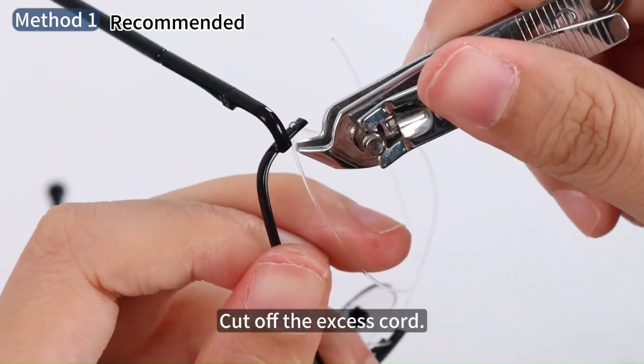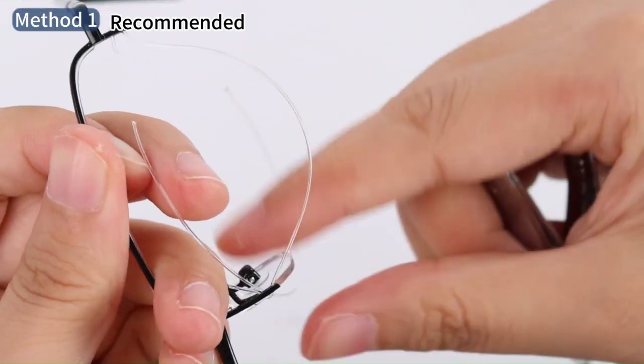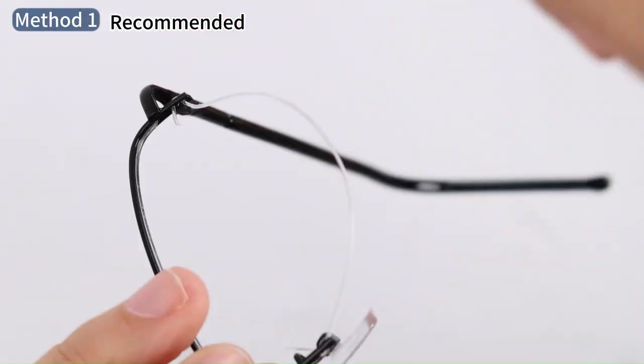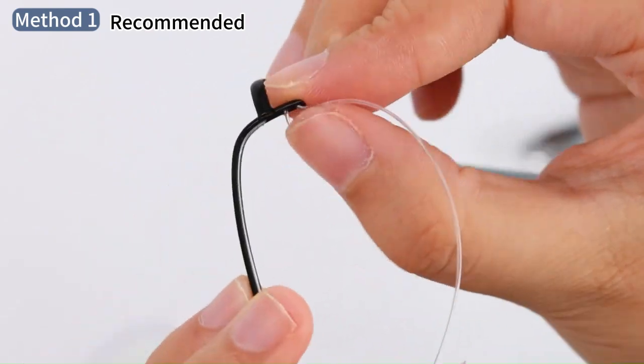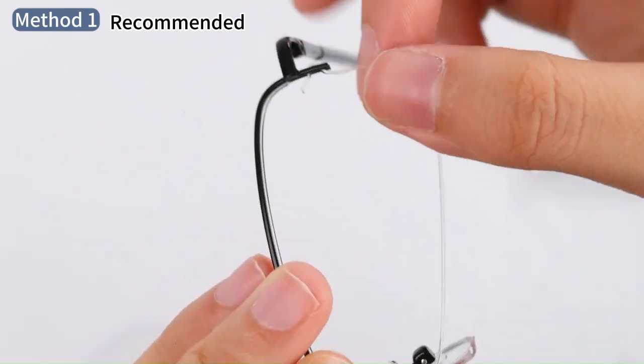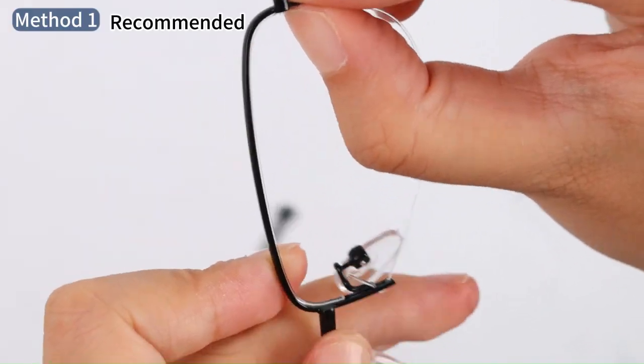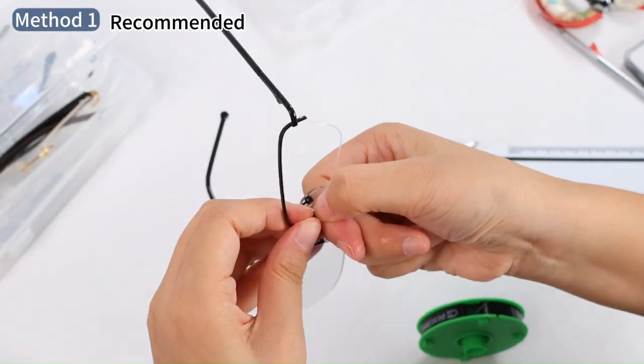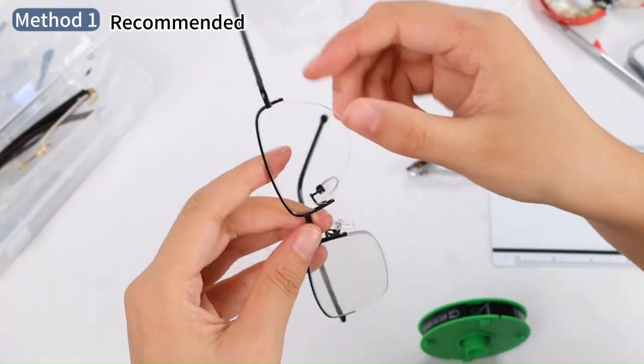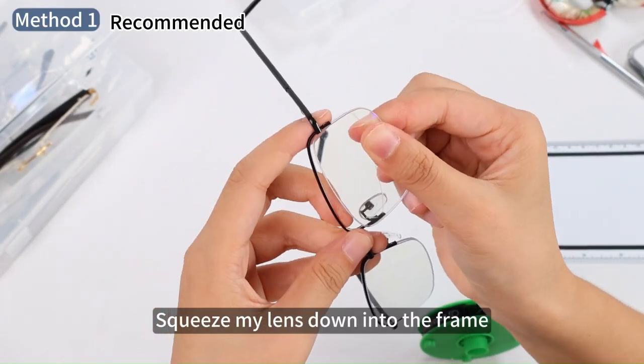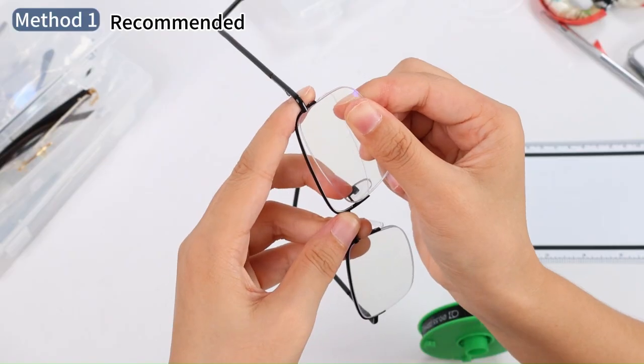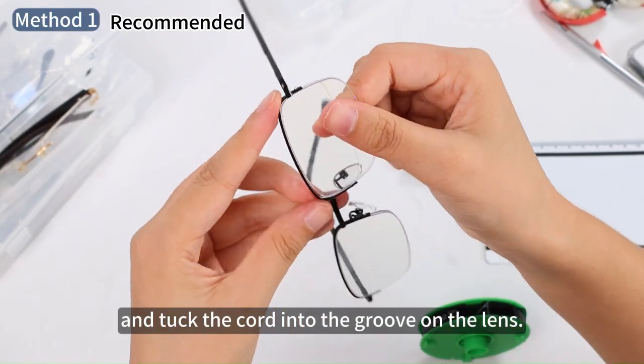Cut off the excess cord. Hide the cord. Squeeze my lens down into the frame and tuck the cord into the groove on the lens.